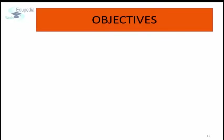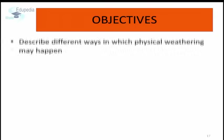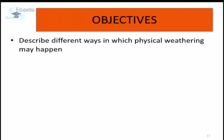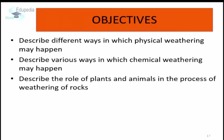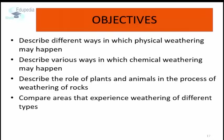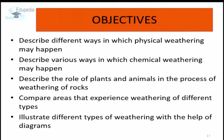In this session, we are going to try and achieve the following objectives: describe different ways in which physical weathering may happen; describe various ways in which chemical weathering may happen; describe the role of plants and animals in the process of weathering of rocks; compare areas that experience weathering of different types; and illustrate different types of weathering with the help of diagrams.